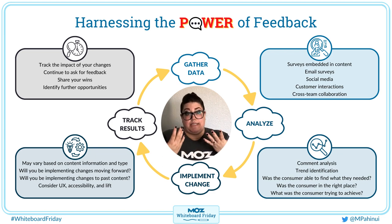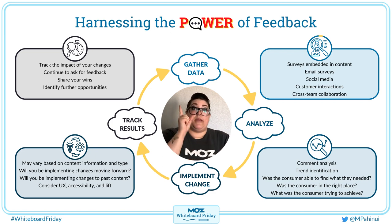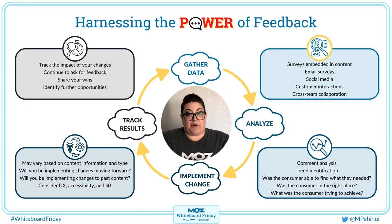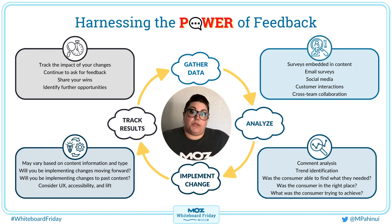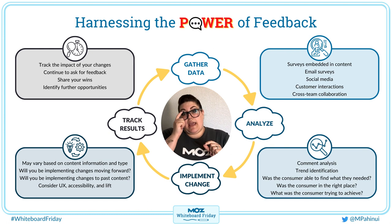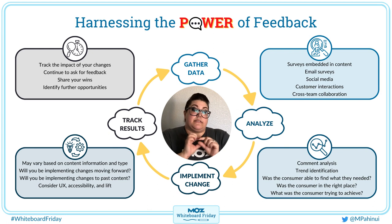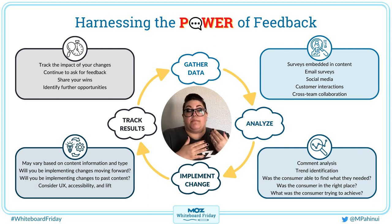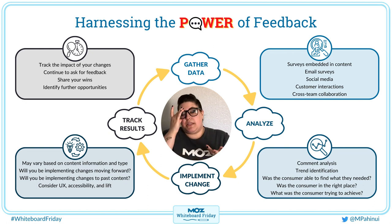So what is the first step? First, we gather data, because we don't know what feedback people have if we don't ask for it. If you are familiar with the Moz Help Hub, you may have seen our surveys at the bottom of all of our articles. Here we ask if the article was helpful, and we do this with a series of emojis that indicate if it met their needs or not. And if the customer indicates that it did not, they have the option to enter a comment letting us know why.